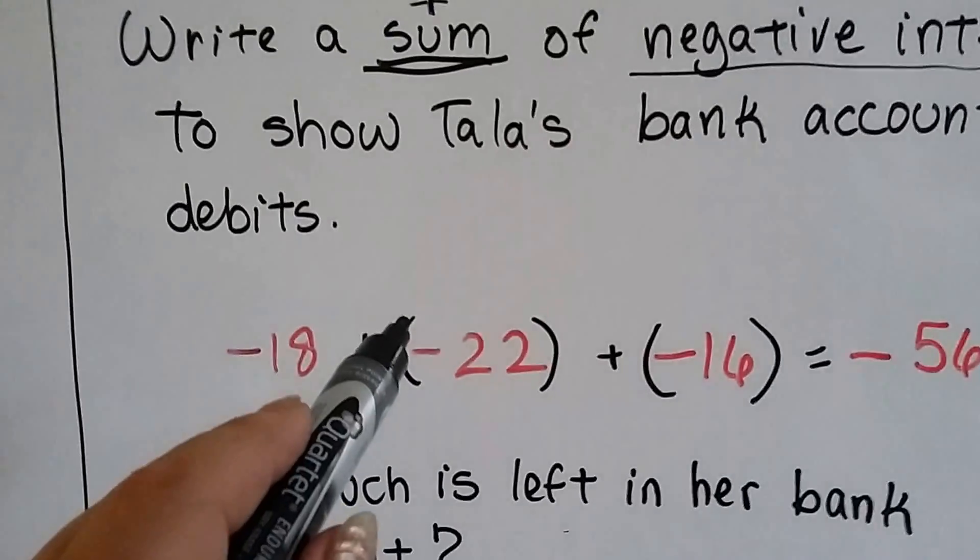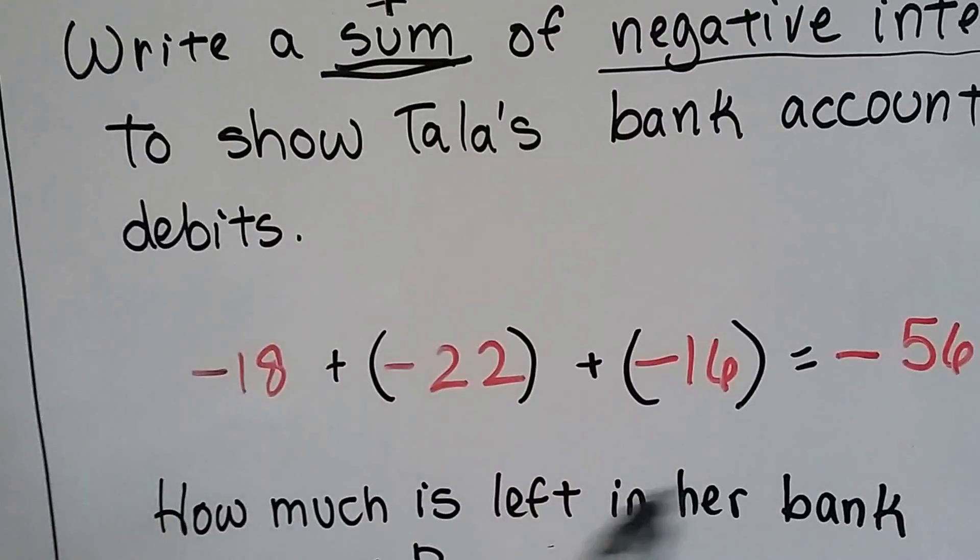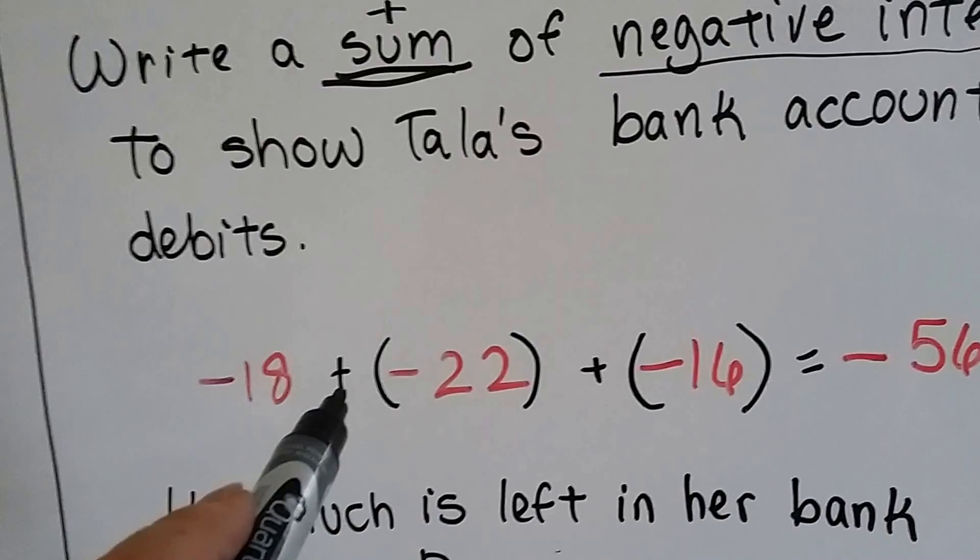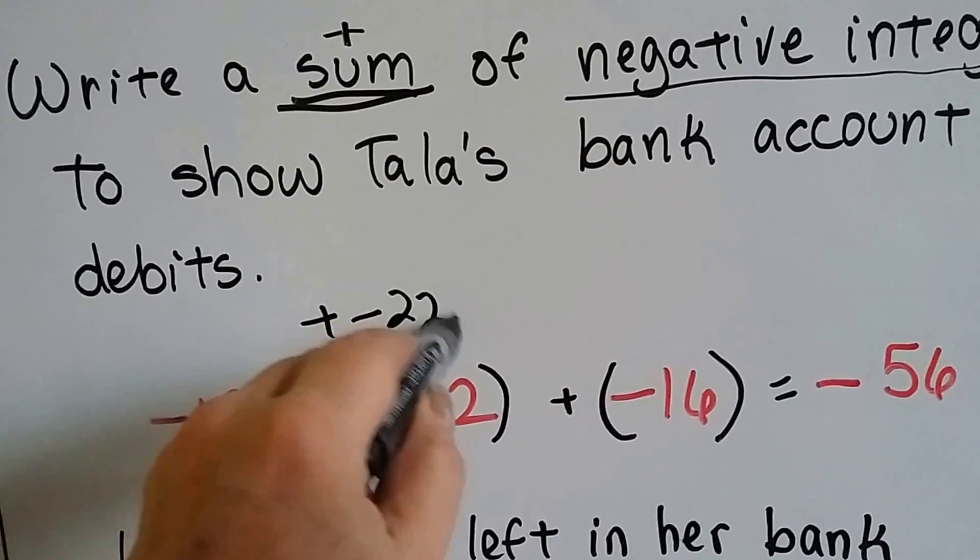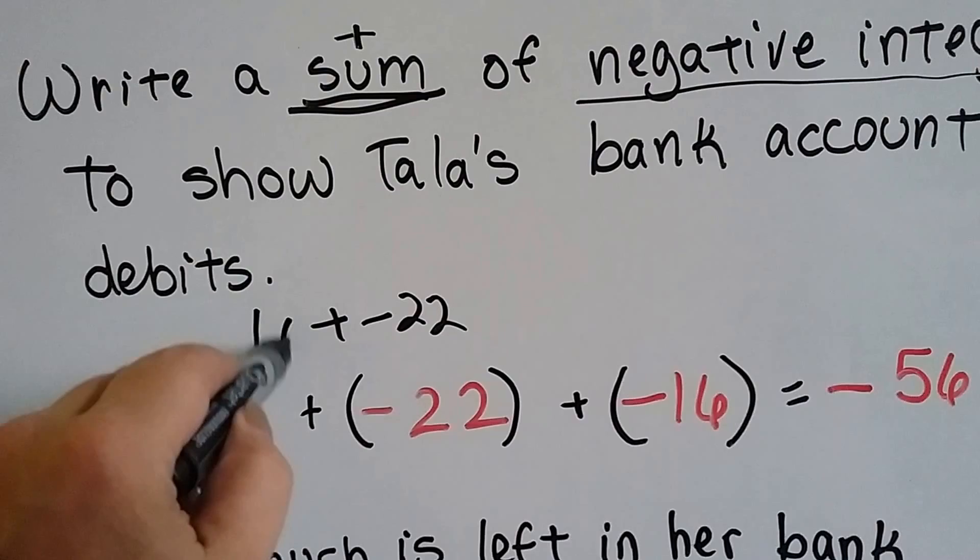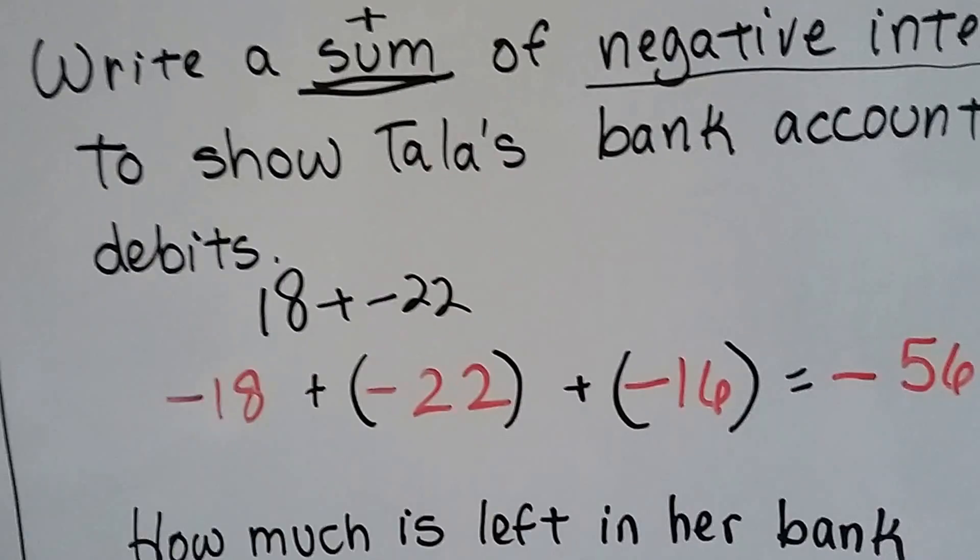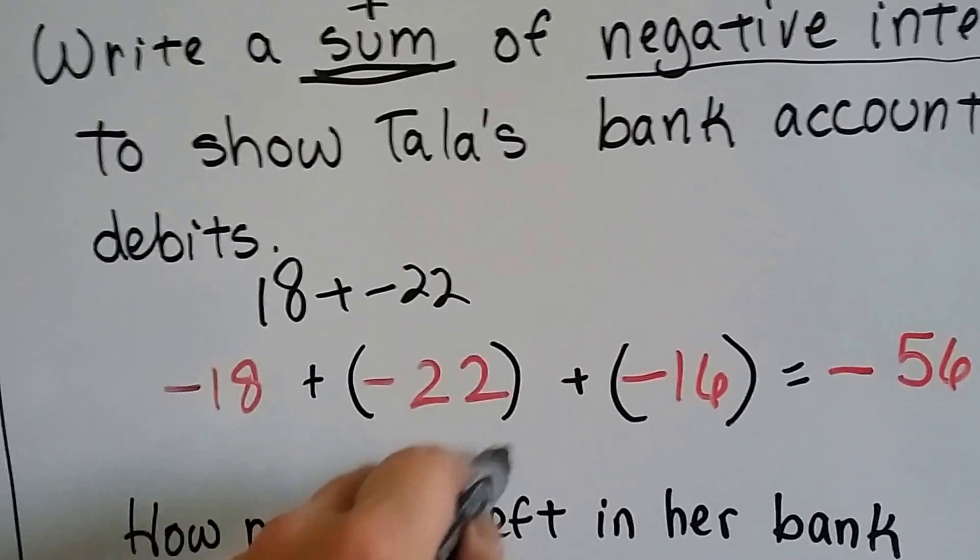And we have to put parentheses here around these two integers. Because if we didn't, we'd have a plus next to a minus. And that would get really confusing, wouldn't it? If you saw that, that's confusing on the eyes.